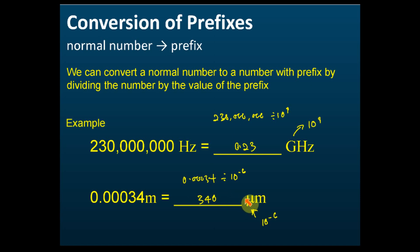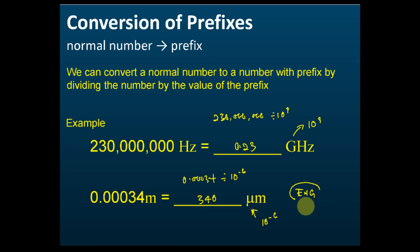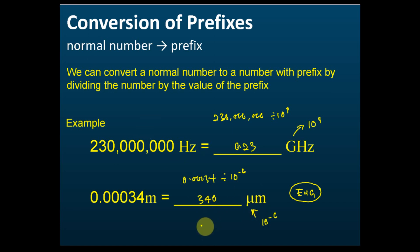We multiply — don't need to divide. There is a function in your calculator called ENG. We use ENG to convert it to the prefix. So the answer is 340 micrometer, or in standard form, 3.4 times ten to the power of 2 micrometer.